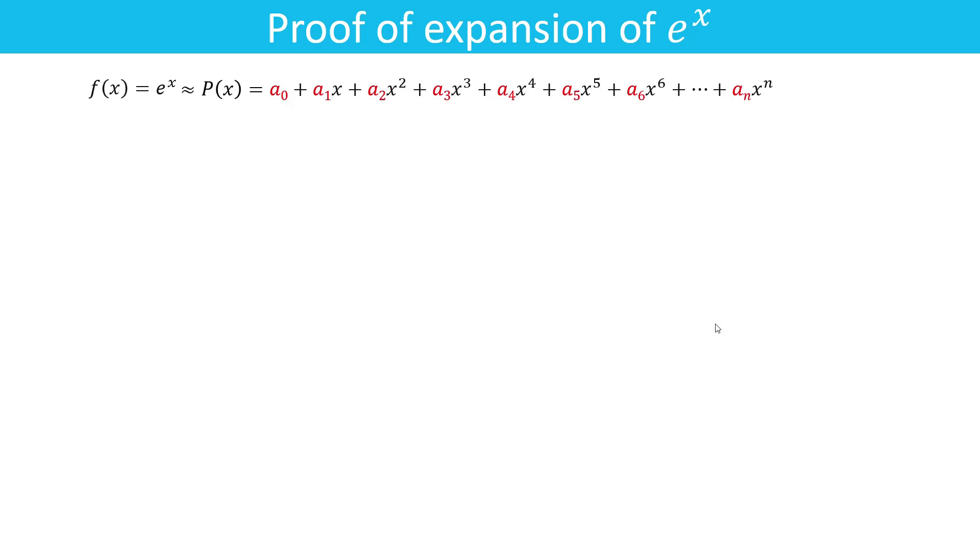To find the value of a₀, a₁, a₂, a₃, and so on up to aₙ, we have to impose certain conditions on both functions. Firstly, f(0) = P(0), that is both functions must pass through the point (0,1). Secondly, all successive derivatives of f and P(x) at x = 0 must be equal to each other.